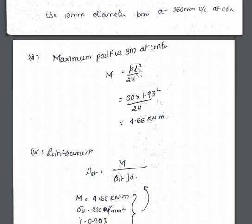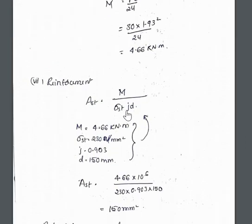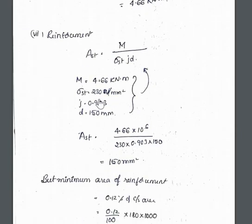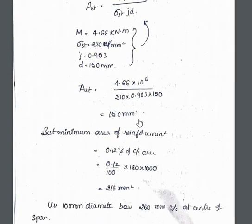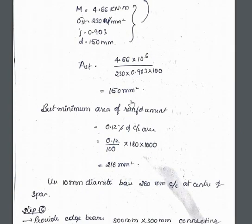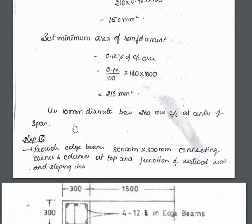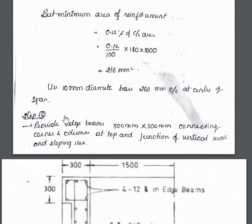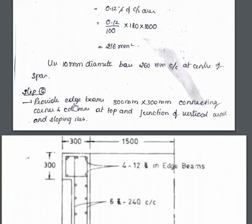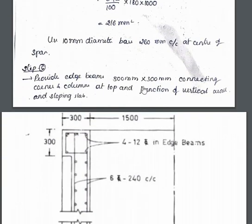For the maximum positive bending moment at the center, the calculation is different. Substituting all values, AST = M / (sigma_st × j × d) gives AST = 150 mm². Checking against the minimum area of reinforcement of 216 mm², we must use the minimum. Therefore, use 10 mm diameter bars at 260 mm center-to-center, provided at the center of the span.